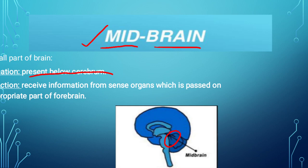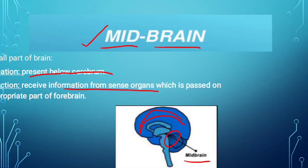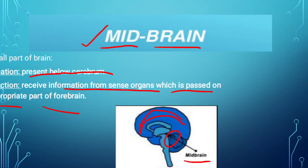Earlier we read about the thalamus, which was inside the cerebrum. But the midbrain is present below the cerebrum. The function of the midbrain is to receive information from sense organs, which is then passed on to the appropriate part of the forebrain. If something is related to hunger or thirst, it goes to the hypothalamus. If it involves perceptions, memory, speech, or decision making, it goes to the cerebrum. And if it concerns sensory functions, it goes to the thalamus — the midbrain conveys messages to different parts of the forebrain according to their function.